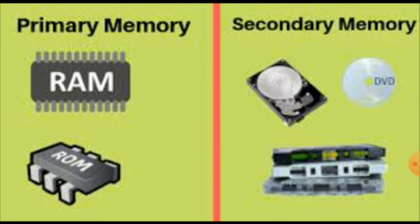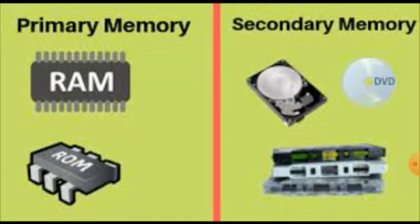Primary memory is the memory which gives the power to execute applications. At the moment when you are working on a computer, the applications you are using are being run by primary memory. Secondary memory is used for storing data for safe-keeping and future use.